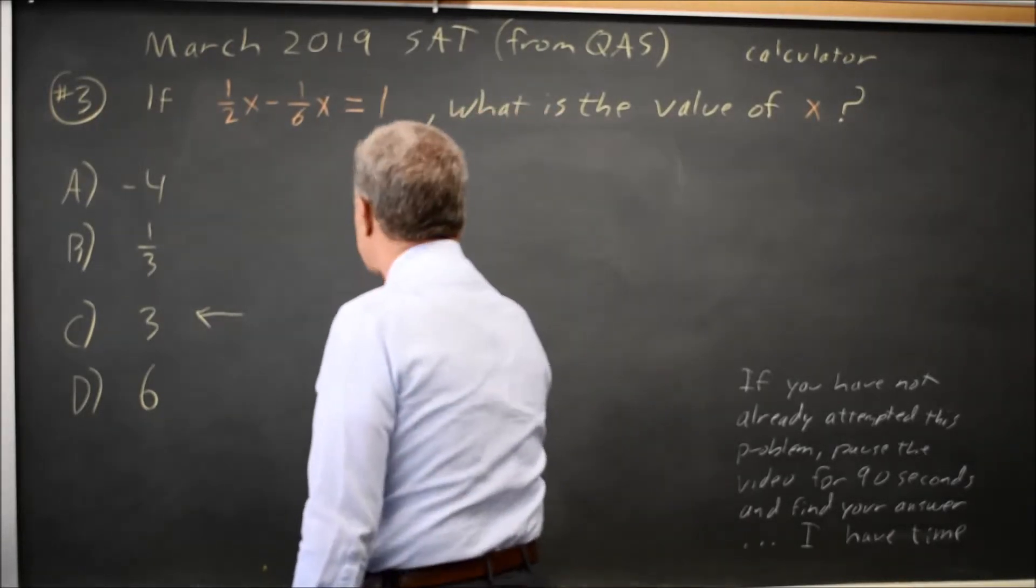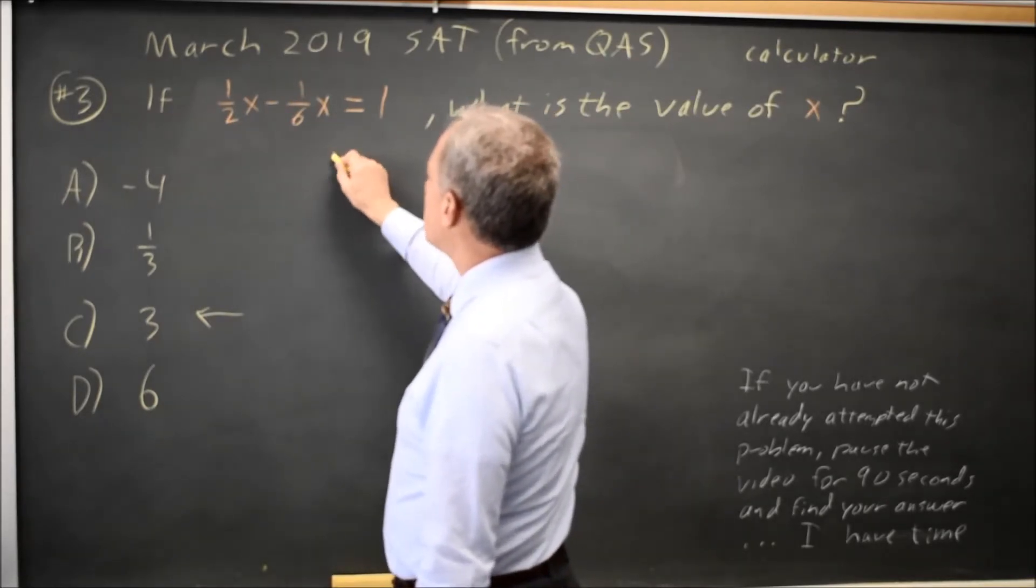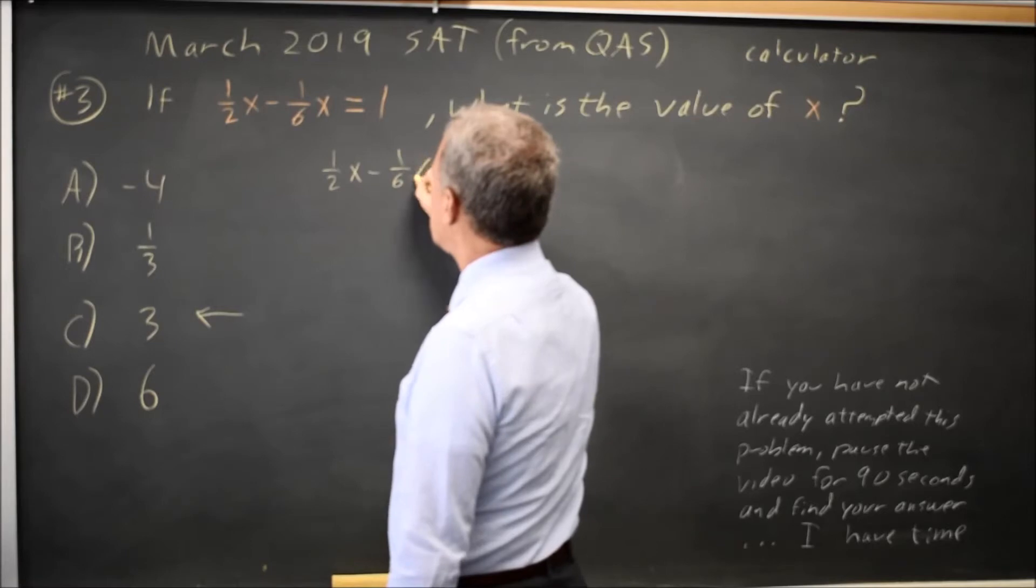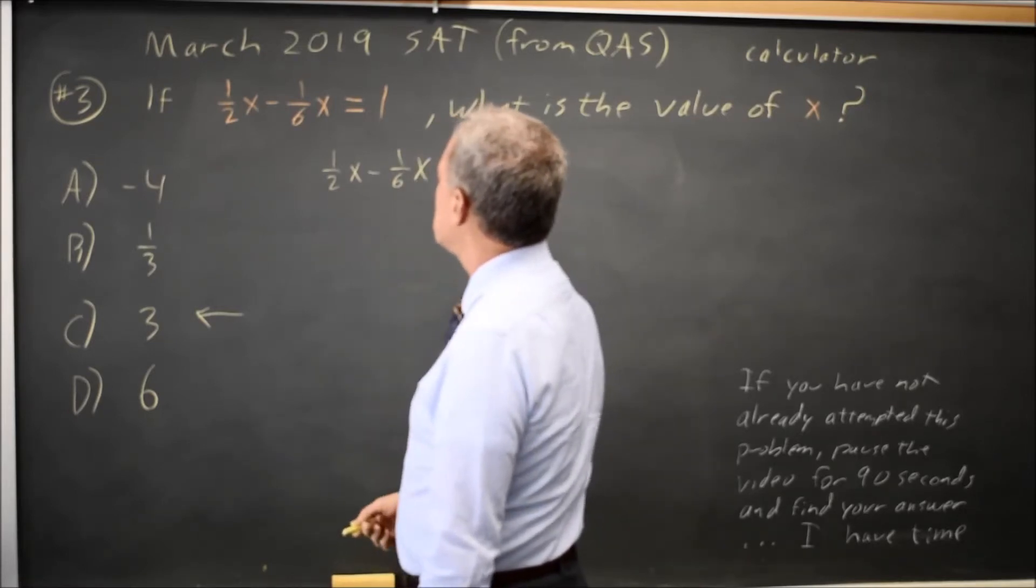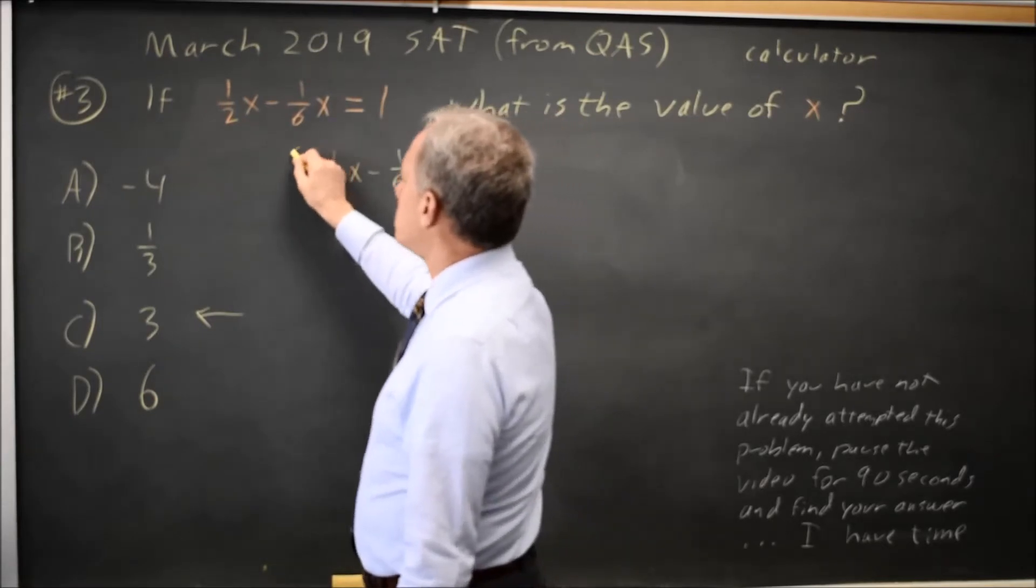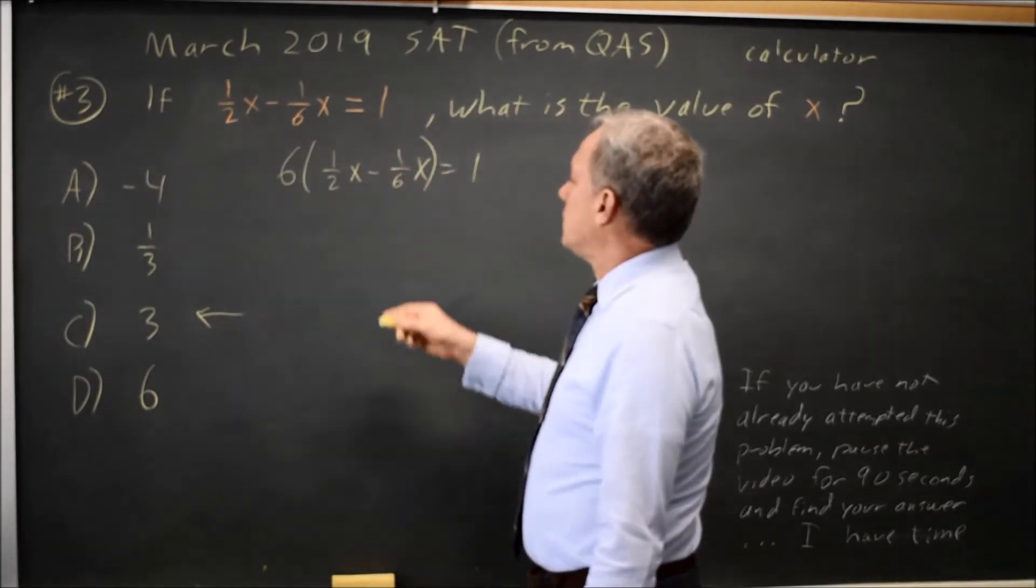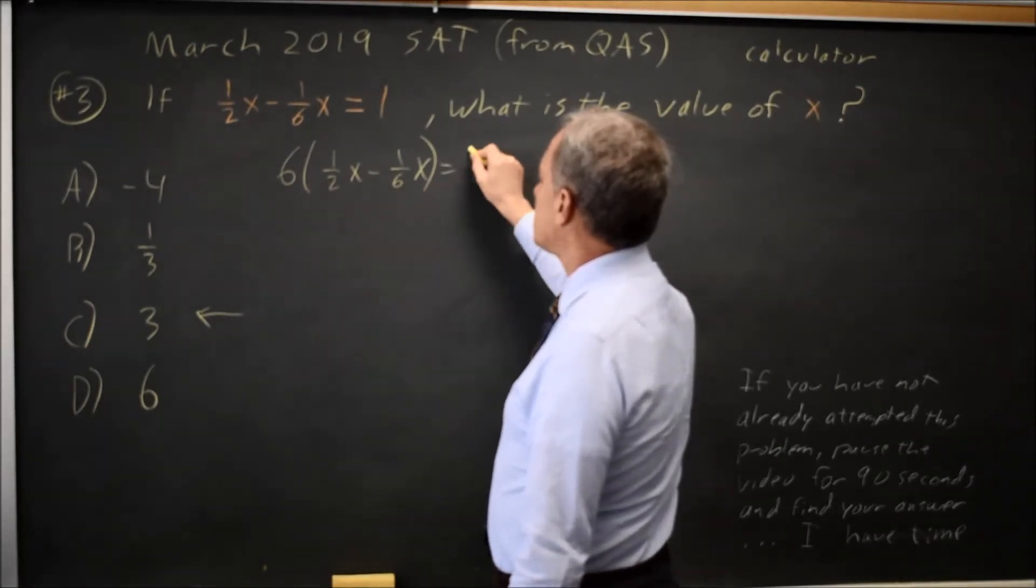But let's do this algebraically also because this is supposed to be dealing with math. If I have 1 half x minus 1 sixth x equals 1, I'm not fond of fractions. It's easy to make a careless error.